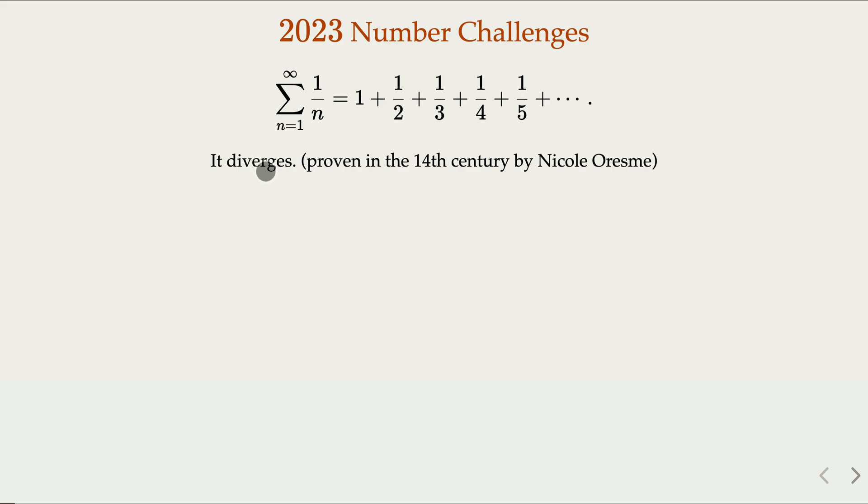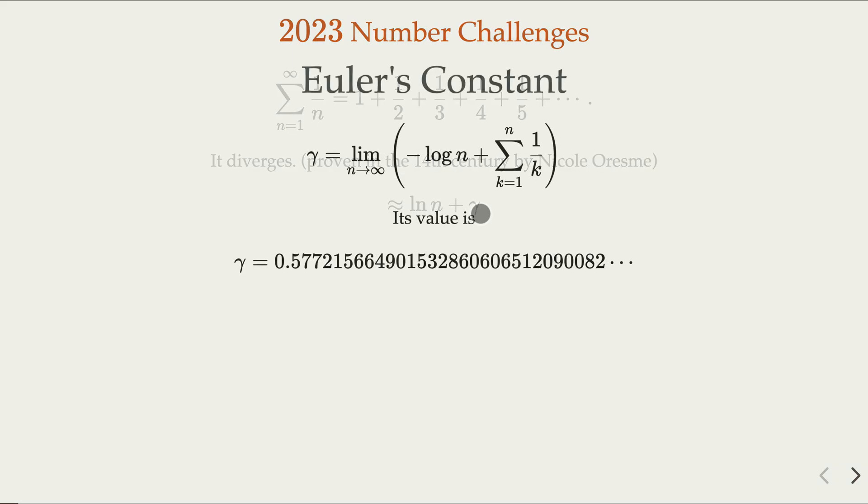Later people figured out it's actually close to log, natural log of n, with some difference here that is called Euler's constant. Euler's constant, that's the limit when n goes to infinity of the value of natural log of n and the sum of the first n term of the harmonic series.